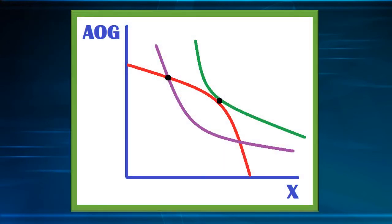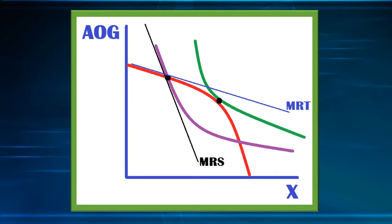We can see this on the graph shown. With perfect competition and no market power, we would be at the green indifference curve, optimizing within the market. When we have market power, we end up at something like the purple indifference curve, where the marginal rate of substitution is not equal to the marginal rate of transformation. When the price — think marginal rate of substitution — is greater than marginal cost — think marginal rate of transformation — we end up producing less X than we otherwise would have, and the allocation of social resources is less than optimal.